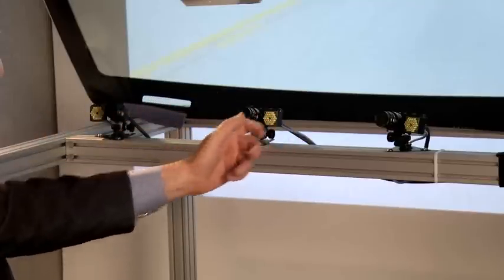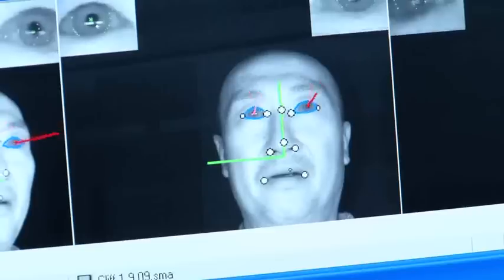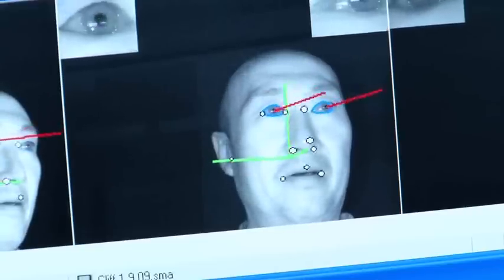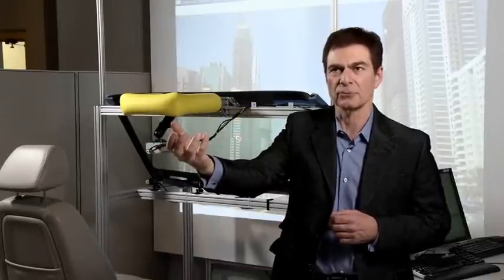As well as cameras in the vehicle to track a driver's position in space, so that what we can do is align the image that we draw on the transparent display with external objects in the real world, therefore augmenting or highlighting those objects on the real world to enhance the driver's ability to see them.